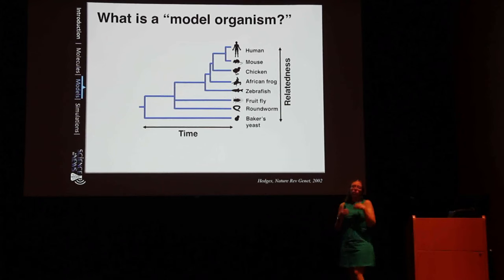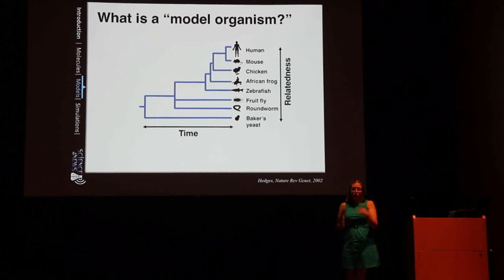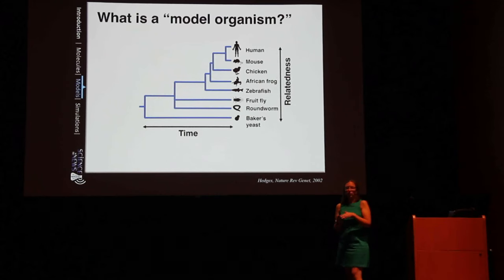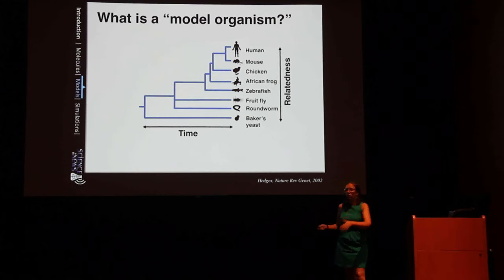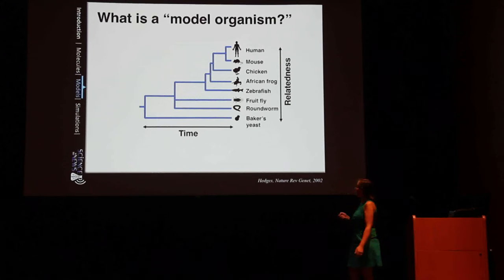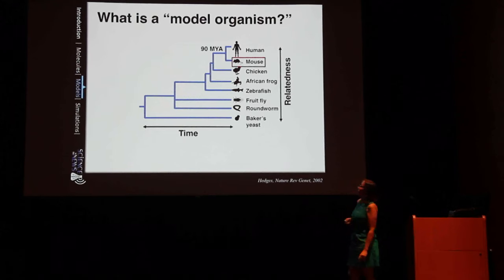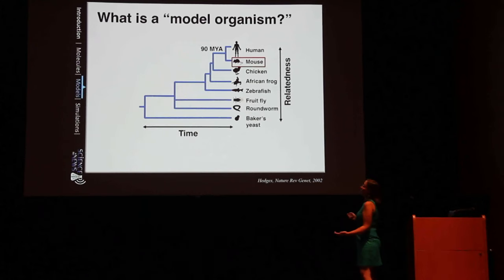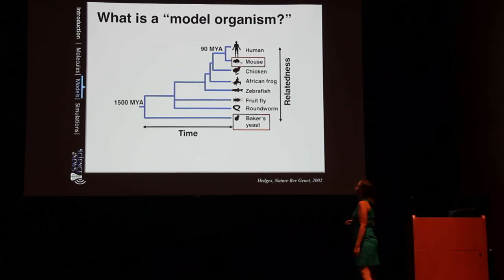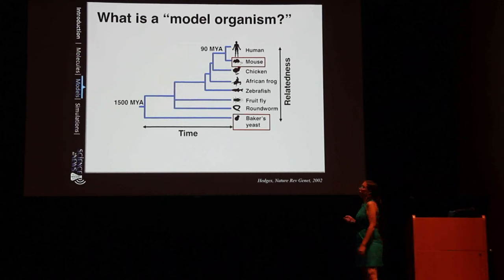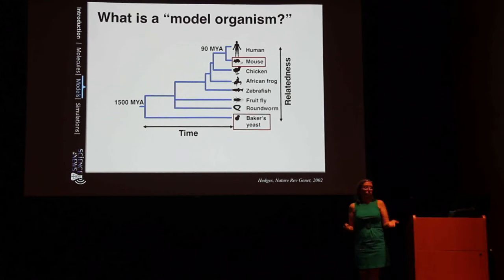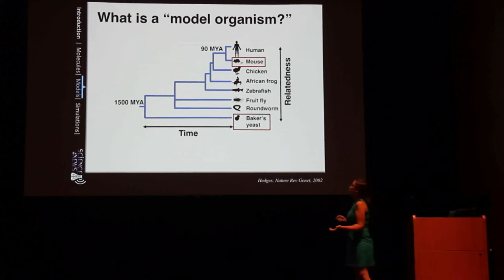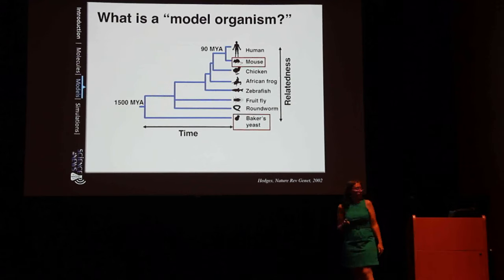Just like your most recent common ancestor with your sibling is your parents — a closer relationship than your most recent common ancestor with your fourth cousin, which would be your fifth great-grandparents. I'm going to talk specifically about mice, which we share a common ancestor with about 90 million years ago, and also baker's yeast, whose last common ancestor with us was 1,500 million years ago — so we're much more distantly related to yeast than to mice.